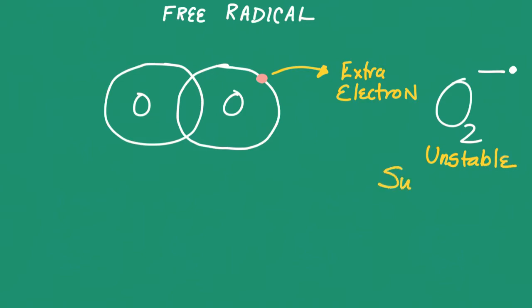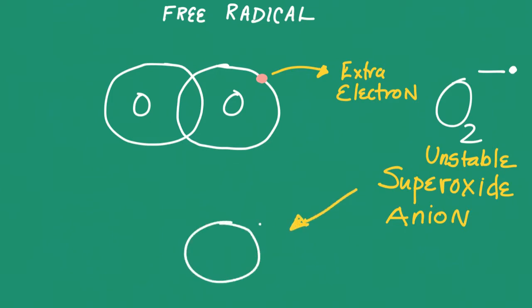This makes oxygen highly unstable. The resulting molecule is called a superoxide anion. It's called an anion because it's negatively charged. It's an ion that has acquired an extra negative charge. This dot that you see there signifies that oxygen has now become a free radical.